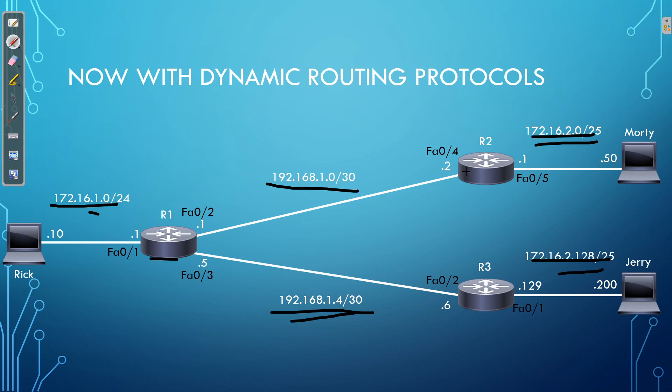The way dynamic routing protocols work, it just allows routers to speak with their neighbors. The neighbors tell them all the information — these are all the networks that exist in the enterprise, these are all the networks I'm connected to, and because I'm telling you this, you can trust that you can reach those networks through me. This is how information is exchanged, and we have to do nothing apart from enable the routing protocol on our Cisco devices.